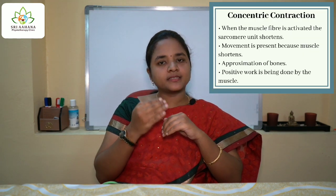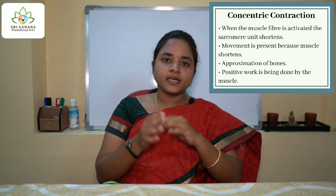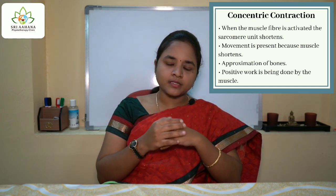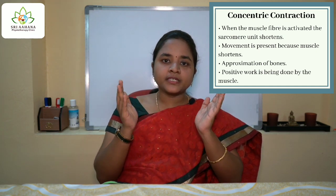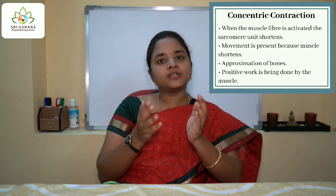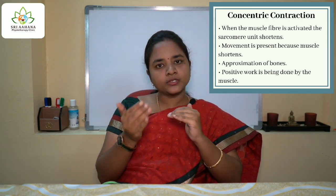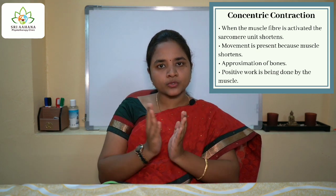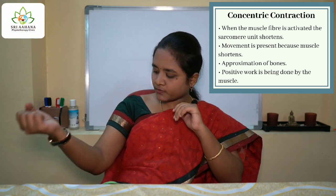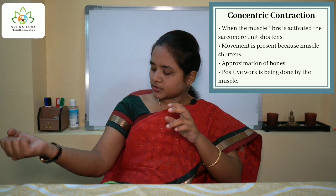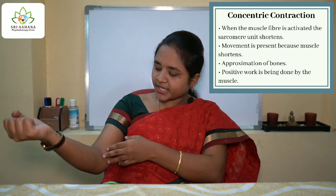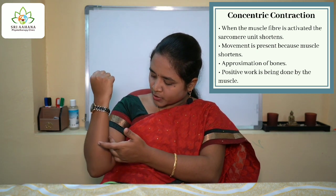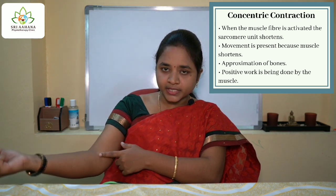The next type of contraction is the concentric type of contraction. In a concentric type of contraction, when the muscle fiber is activated, the sarcomere unit shortens in length. Movement occurs and the bones to which the muscles are attached get approximated — that is, they come close together. Here I have an example of elbow flexion. When I flex my elbow, see what happens — these bones are getting approximated and the joint angle is changing.